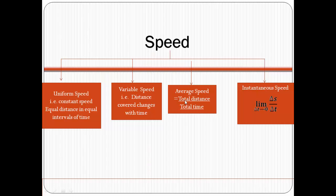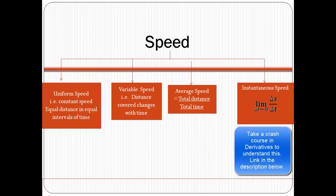Third is average speed. It is calculated as total distance upon total time. And the final one is instantaneous speed — it is the speed that you calculate at a given time. We will now consider an example to understand the types of speed in detail.